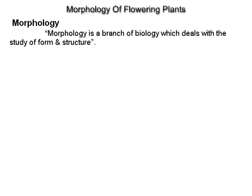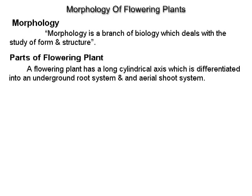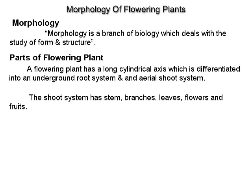Morphology of flowering plants. Morphology is a branch of biology which deals with the study of form and structure. A flowering plant has a long cylindrical axis which is differentiated into an underground root system and an aerial shoot system. The shoot system has stem, branches, leaves, flowers and fruits.